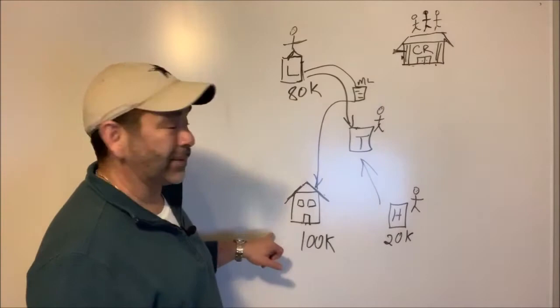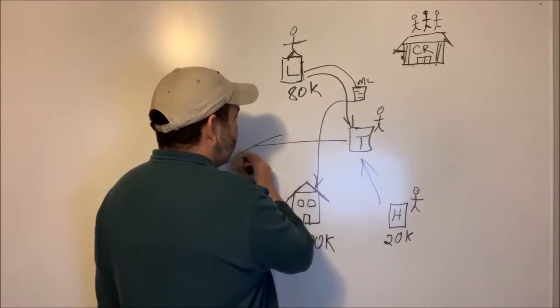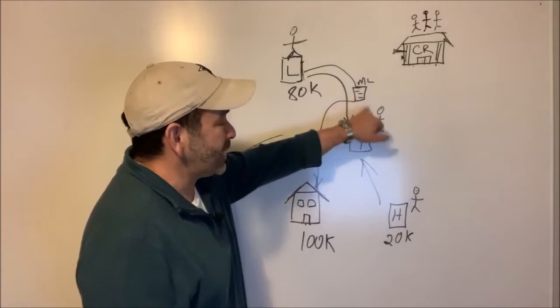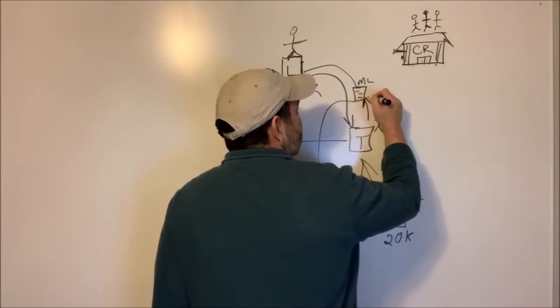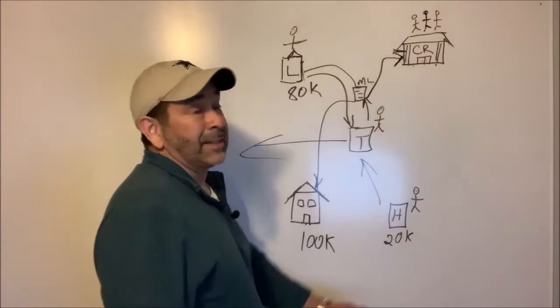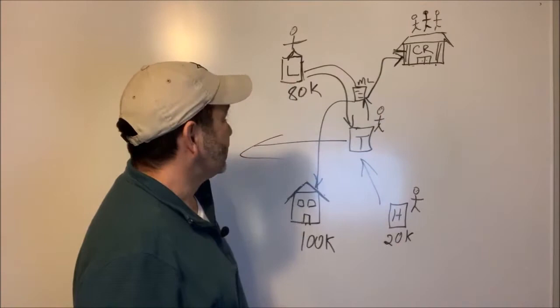Once all that money gets there, Tom gives all that money to the seller, whoever they're buying that house from. Once this lien is signed by Henry, Tom the title guy will take this lien and record it over here at the county records. The county records is public records, so it's there for anybody to see that Henry still owes Larry $80,000.